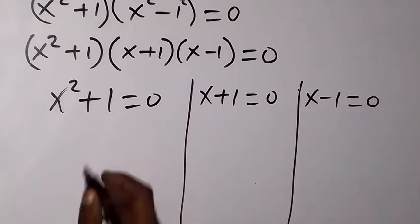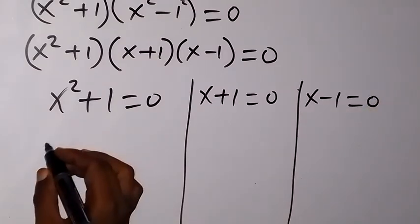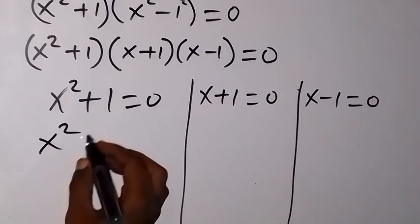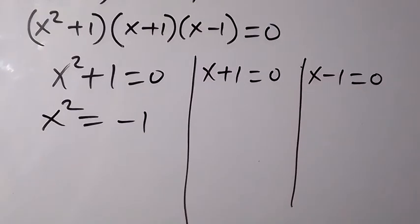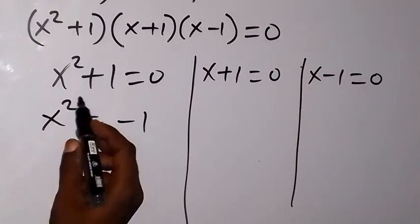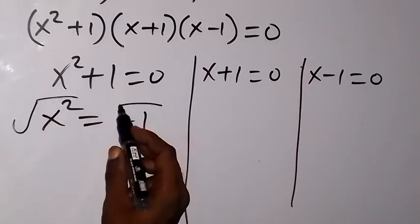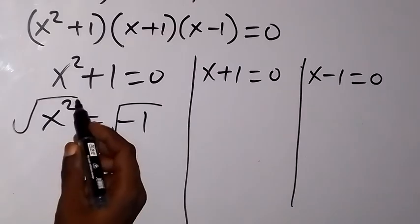So when we solve this on this side, we are going to have x square equals to, take plus 1 to this side, become minus 1. And we can take the square root on both sides just to cancel the square.